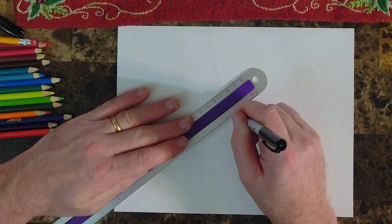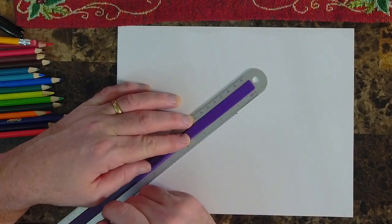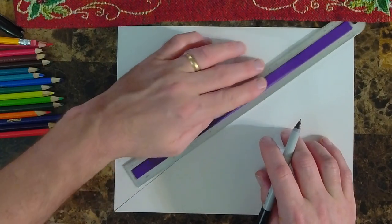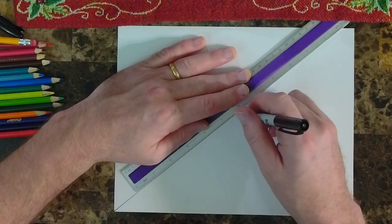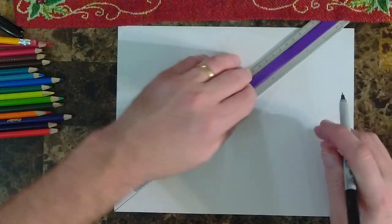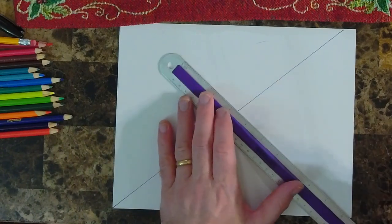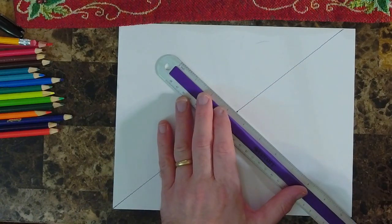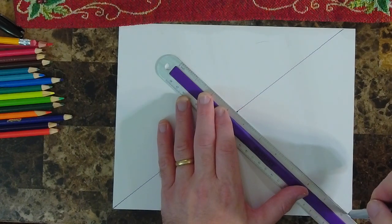So we're going to start with a little dot in the middle of our paper. We're going to take our ruler and go out from the dot, and since we don't have a long ruler, we're going to have to move our ruler down because we're going to try to make a straight line going all the way to the top. We're kind of going from one corner to the other. Then we're going to do just the opposite. We're going to make a big X on our paper.